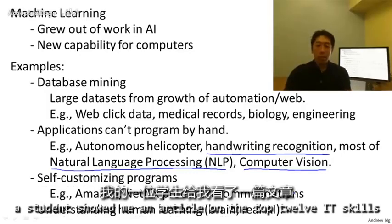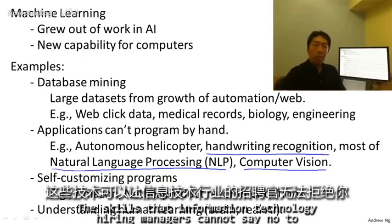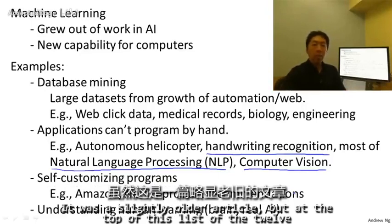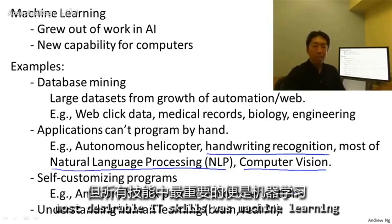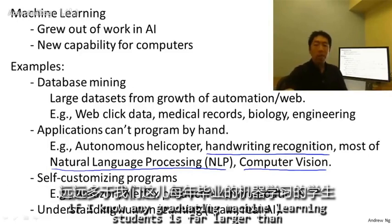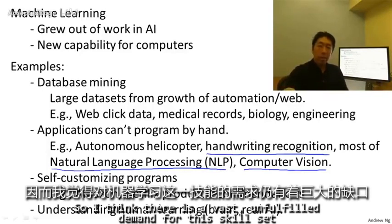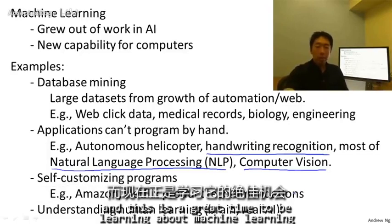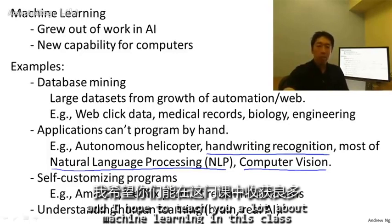A few months ago a student showed me an article on the top 12 IT skills — the skills that information technology hiring managers cannot say no to. At the top of this list of the 12 most desirable IT skills was machine learning. Here at Stanford, the number of recruiters that contact me asking if I know any graduating machine learning students is far larger than the number of machine learning students we graduate each year. So I think there's a vast unfulfilled demand for this skill set, and this is a great time to be learning about machine learning.